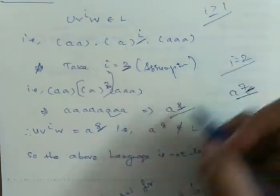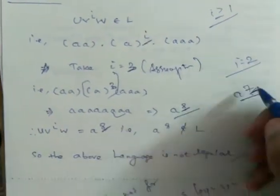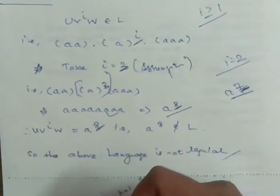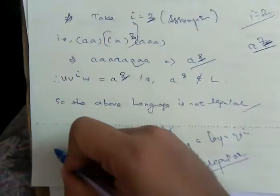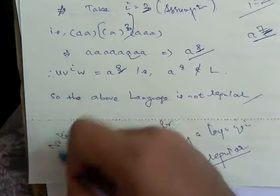If we put i equals 2, we will get a^7. Since 7 is a prime number, a^7 is in the language. So we have an important note here.